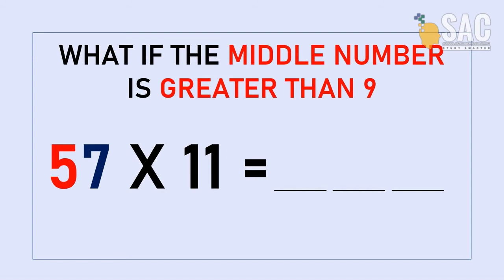First one is 5, last one is 7, but the sum of 5 and 7 is 12, so should I write 12 in the middle? Nope! If the middle one is greater than 9, you add this 1 to the front number.